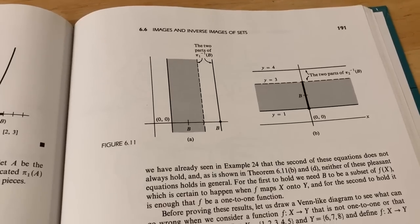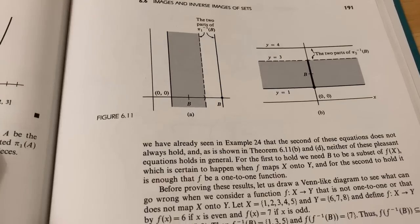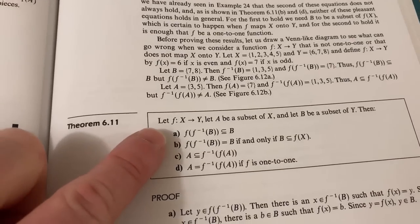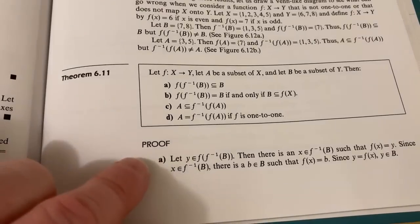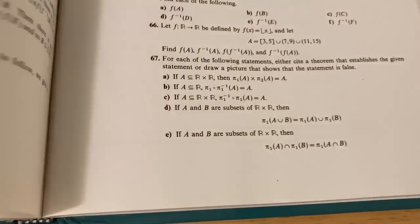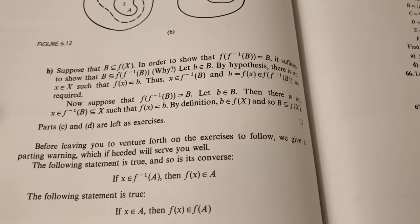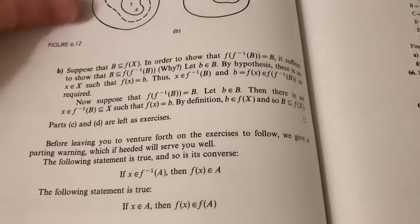This is from this section on images and inverse images of sets. And this is a pretty good section. Here they have a really big theorem and they have A, B, C, and D. Looks like they prove A and they prove B. And parts C and D are left as exercises, which I honestly think is okay.